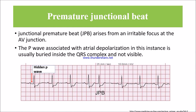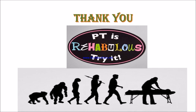Let's see about the premature junctional beat. The junctional premature beat arises from an irritable focus at the atrioventricular junction. Looking at the ECG, the P wave denotes atrial depolarization. In this example, the P wave is not clearly visible as in a normal ECG — it is hidden under the QRS complex — because the beat is premature. If you have any doubts related to any topics in NPTE or PCE, please let me know in the comments so I can make videos on that.